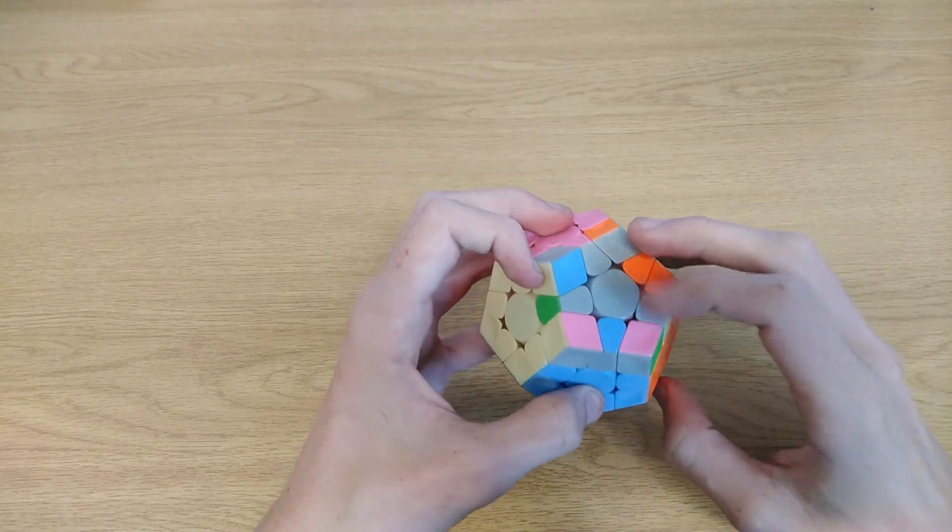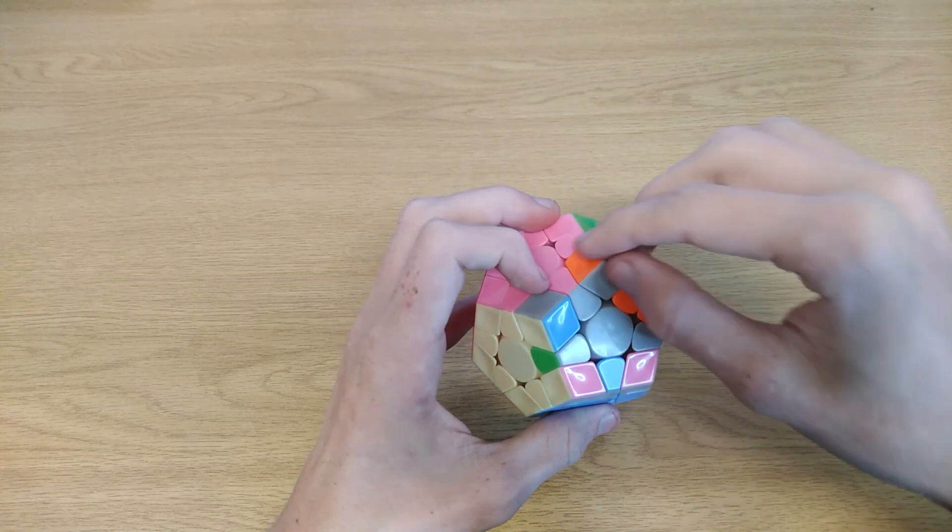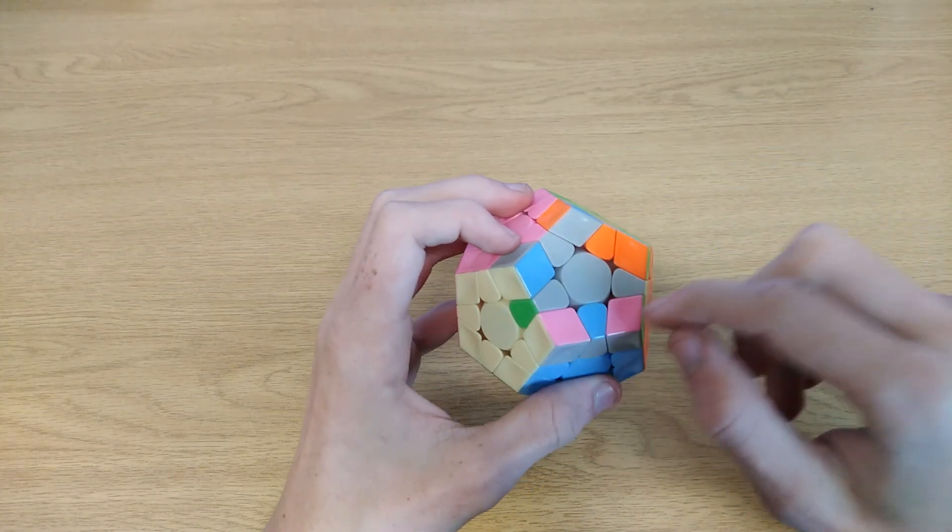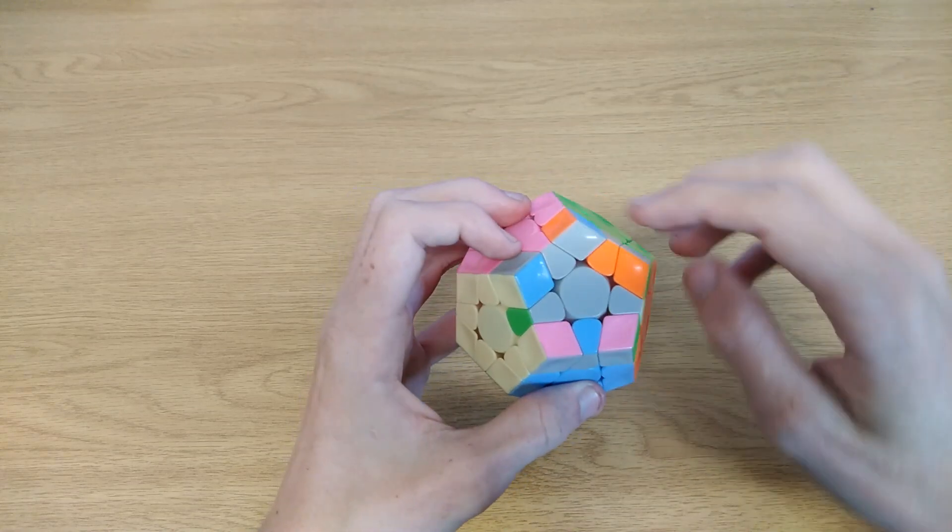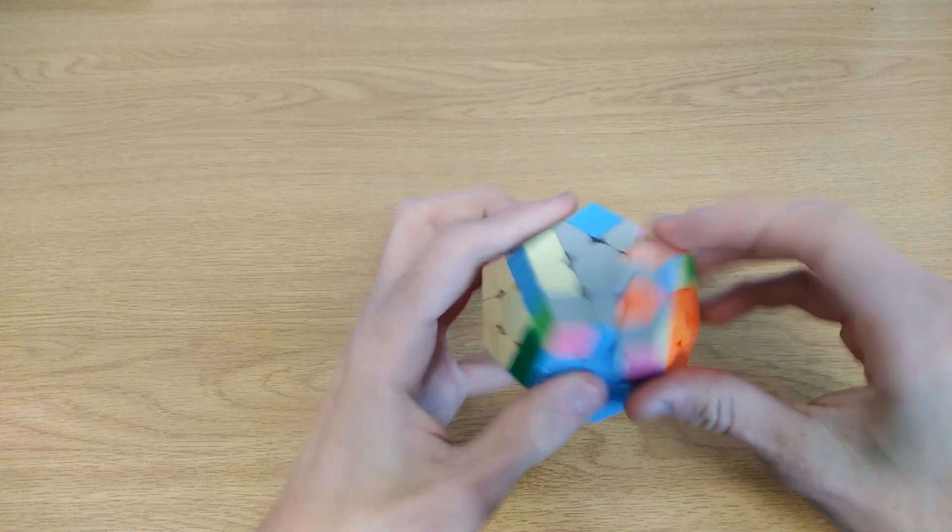For instance, the normal way to solve this is F sexy move F', but I know when I did the F sexy move F', this corner, if it's oriented, will change. This one won't, this one won't, and this one won't. So therefore, it will be the 5 corner orientation, which is not a good case.